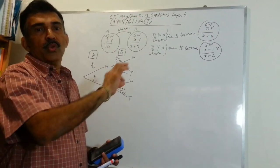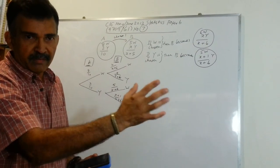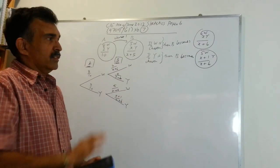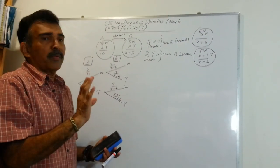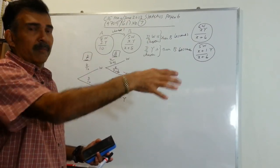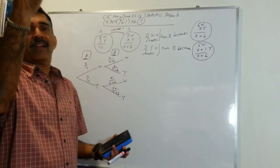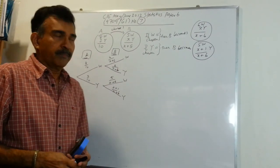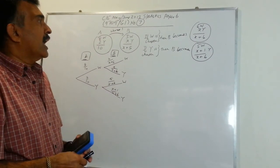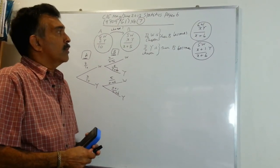Then what do you do? You pick one from box B. So, very simple process: pick one from A, dump it into B, and then you pick one at random from B. I've summarized the process here on the board.